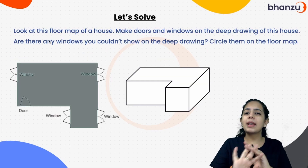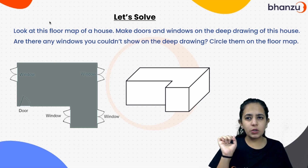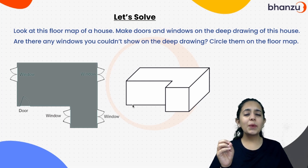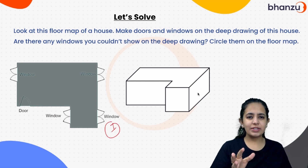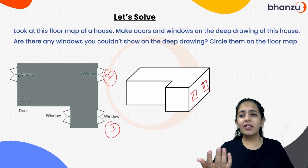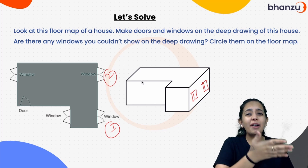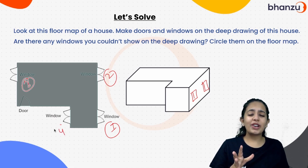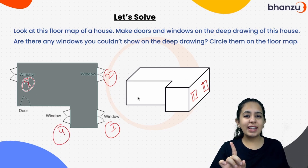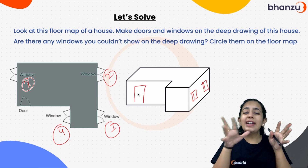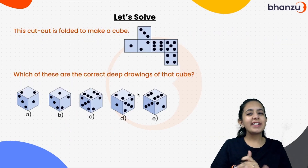Now let's solve some questions. The first question asks you to do the deep drawing from a floor map. Let's start with the first window, then draw another window at the back of it. There's another window that we can't make visible — that part is hidden. The third and fourth windows are not visible but the door is visible, so let's draw the door. That's the deep drawing from a floor map.